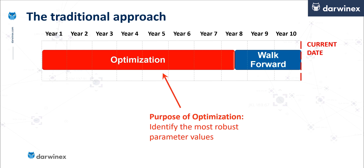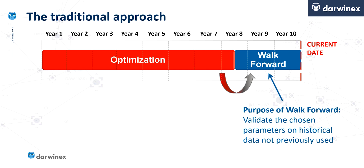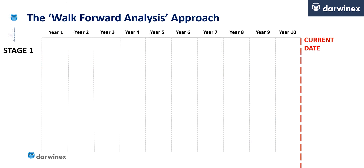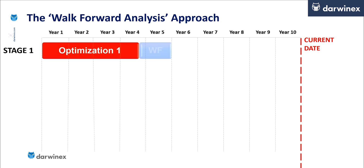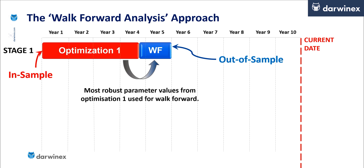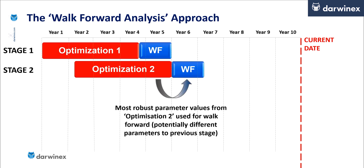The purpose of the optimization phase is to identify the most robust parameter values, and it's these values that then get passed through into the walk-forward validation phase. The purpose of this is to validate those chosen parameters on historical data that they've not seen before. Now in terms of the walk-forward analysis approach, the optimization is split up into a number of stages. So for stage one, a much smaller optimization is undertaken, and the best values from this are passed forward into the first walk-forward stage. And then for the second stage, the optimization window is pushed forward, and because this is over a different period of time, it may well produce different parameter values, which get passed forward into another walk-forward validation phase.